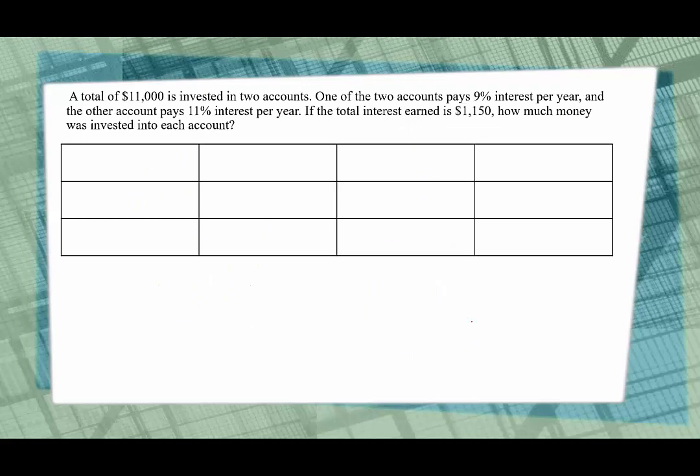In our next example, a total of $11,000 is invested into two accounts. One of the accounts pays 9% interest per year and the other account pays 11% interest per year. If the total interest earned is $1,150, how much money was invested into each account? I find with these, because these can be really scary, set up a table. Use the table. The table will make your life better. I promise.